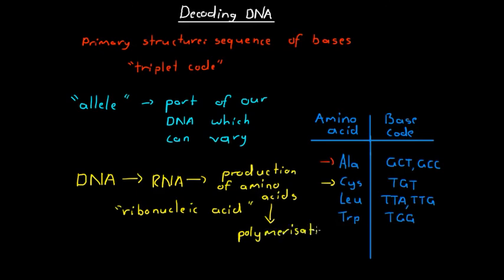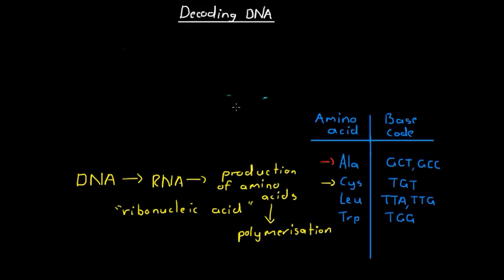From there, our amino acids undergo a polymerization reaction into proteins. That is how DNA is actually decoded in the body and manifests itself — how it carries information into the actual proteins our body produces. As a brief example, consider a DNA molecule that has the following base sequence of 12 nucleotides, each with bases in a specific order.